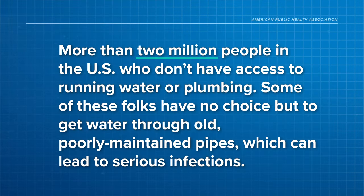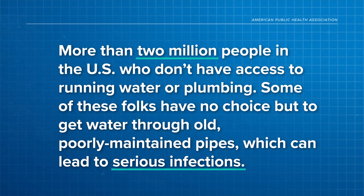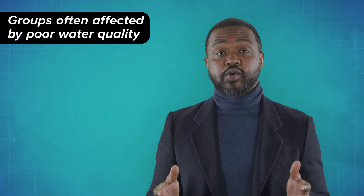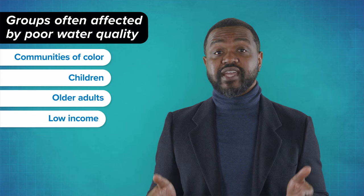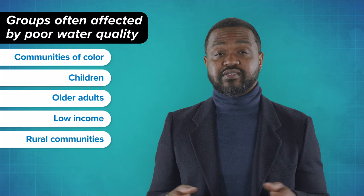Like the more than 2 million people in the US who don't have access to running water or plumbing. Some of these folks have no choice but to get water through old, poorly maintained pipes, which can lead to serious infections. And the people affected by poor water quality are disproportionately communities of color, children, older adults, and low-income or rural communities. Historically, less affluent neighborhoods haven't received enough funding to fix their water infrastructure. To make sure this problem is handled equitably, APHA recommends that federal and local governments use any extra money to improve the water infrastructure in those neighborhoods.